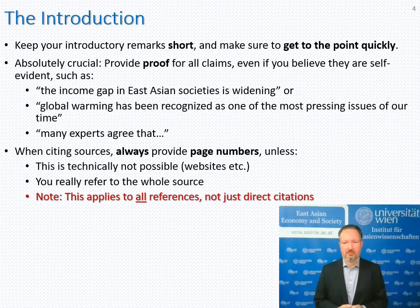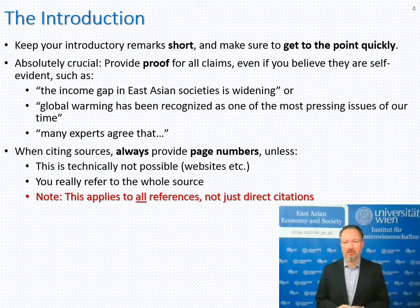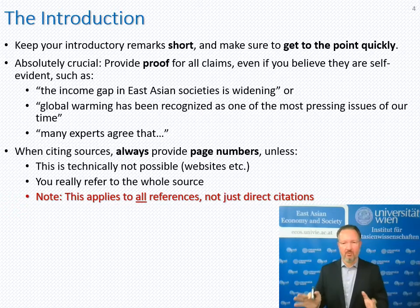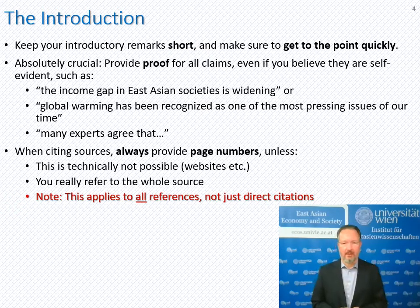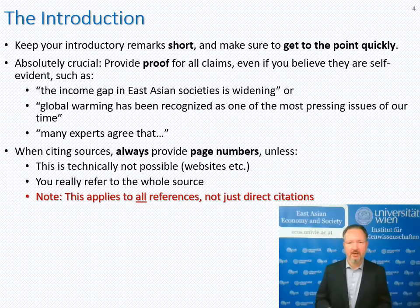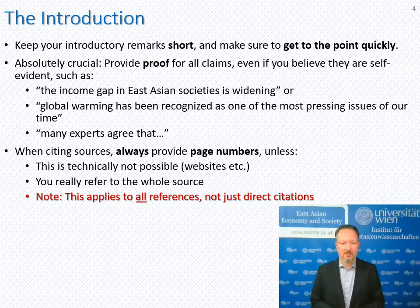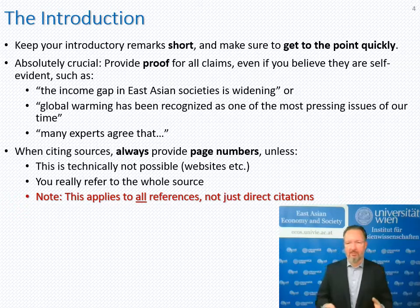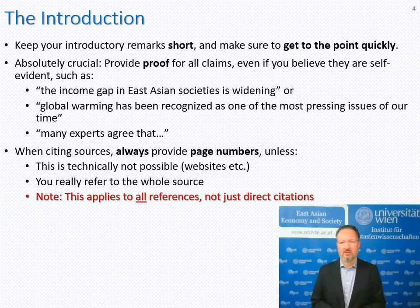The same goes for global warming being 'recognized as one of the most pressing issues.' Recognized by whom? Who says so? If you provide a quote from something — it can even be a newspaper — don't leave this without any proof. And 'many experts agree' is something I really dislike, because it's ambiguous. What is many? Who is an expert? Who are those many experts? I'd rather see that Miller, Smith, and Carpenter agree that... — this is much better than saying 'many experts.' In any case, you need to provide proof.